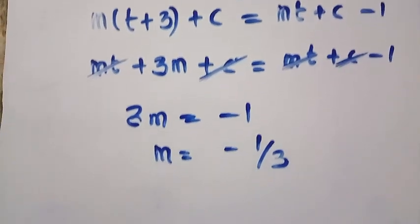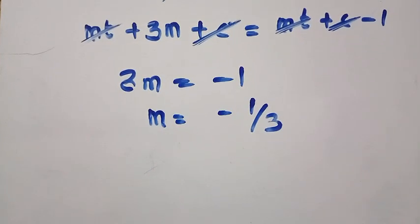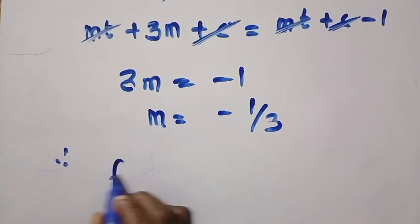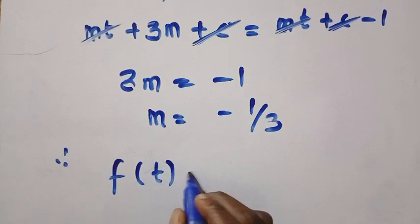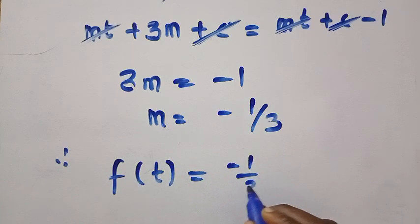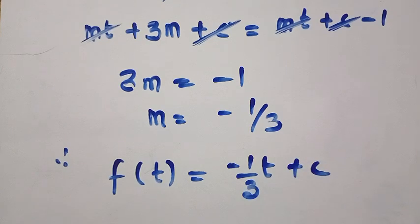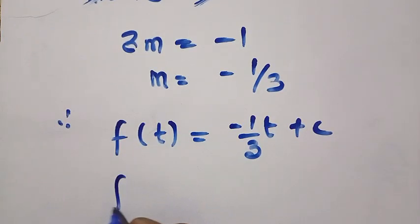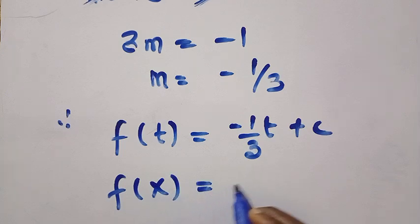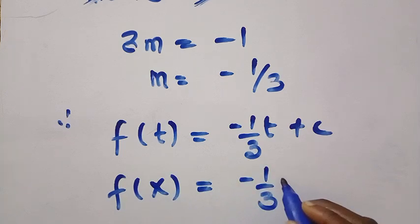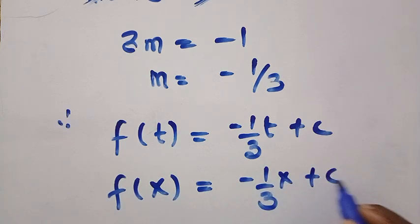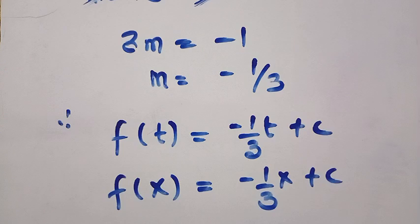Recalling the linear form, we have f of t equals minus 1 over 3 times t plus c. Therefore, changing t back to x, we have f of x equals minus 1 over 3 times x plus c. This is the final answer to this problem. Thanks for watching. See you in the next video. Never stop learning. Bye-bye.